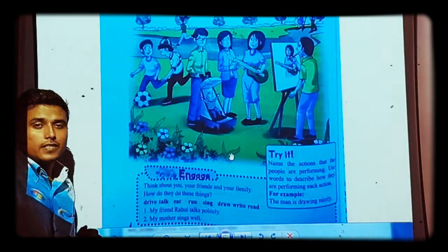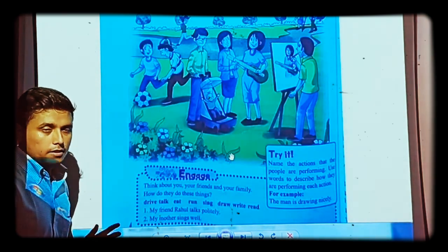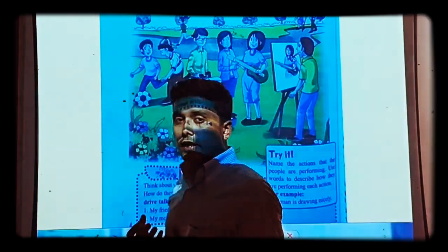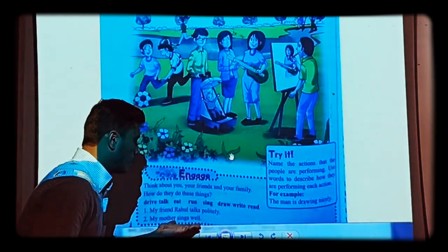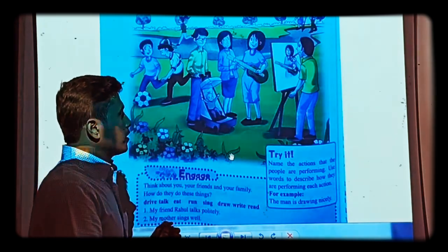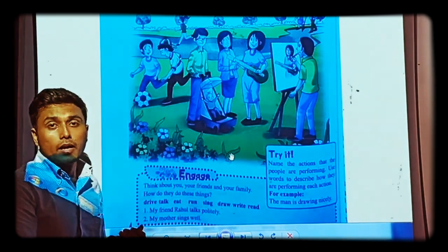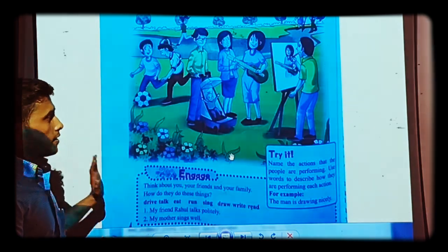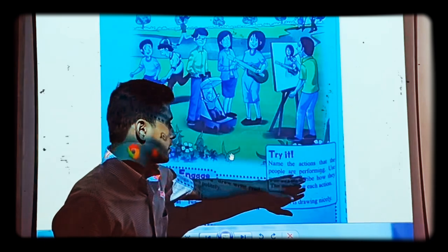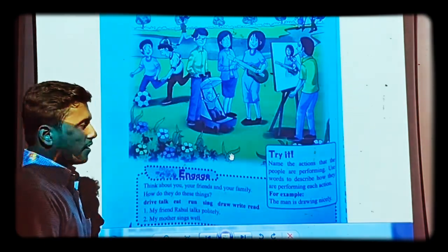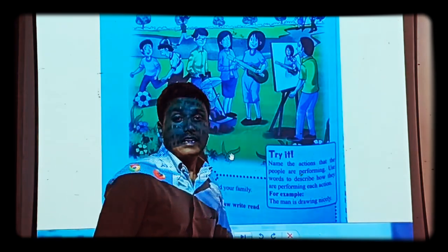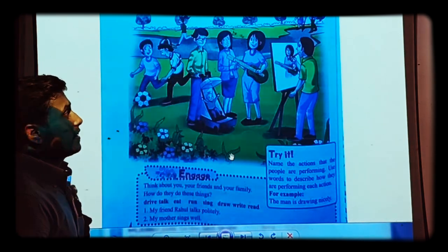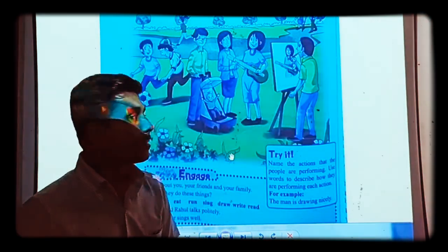The second example is: my mother sings well. My mother sings — and how does she sing? She sings well. So here we are getting the way things are happening, like 'politely' or 'well'. We are getting the manner in which things are being done, whether it is good or bad. Now, let's discuss this picture. Name the actions the people are performing and use words to describe how they perform each action. For example, the man is drawing nicely — he is drawing a picture on a canvas.